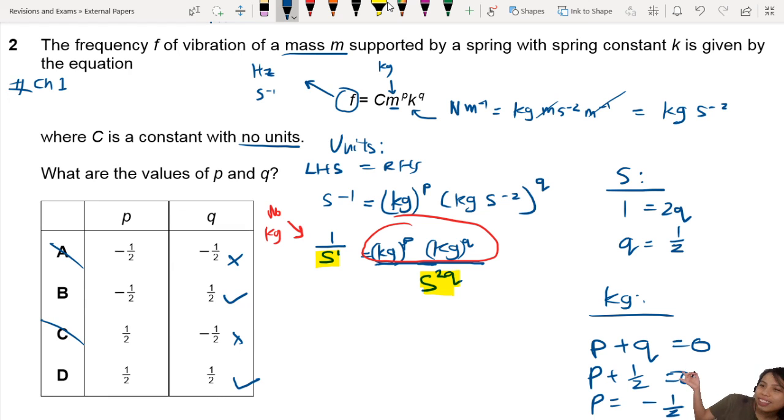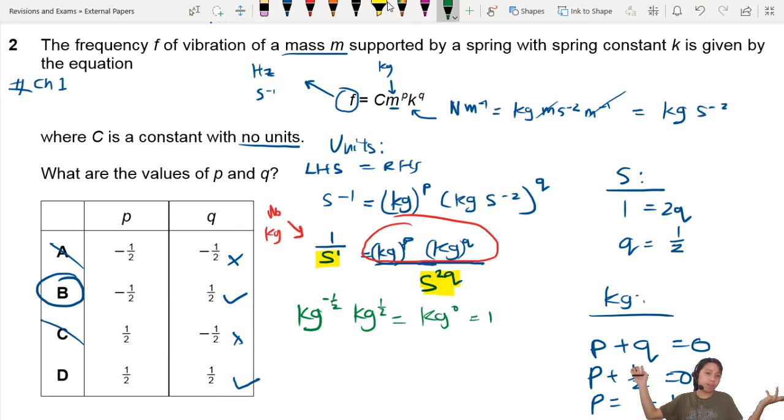There we go. So negative half. Now if you're not sure, you're kind of confused, I can double check for you. So let's do some checking. What if kg is negative half times kg to the power of half? What do you get? Half and half - zero. Oh sorry, not zero. One. kg to the power of zero means just one. So kg disappears. So that's how you can check for units like this, either in paper 2 or paper 1. Next question, find the next video.